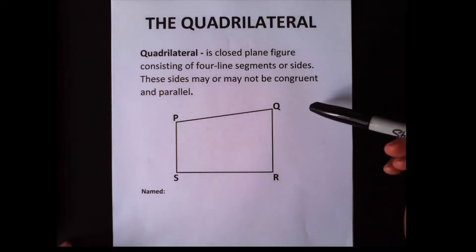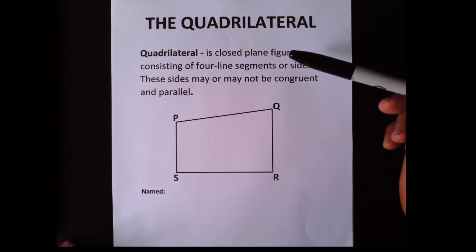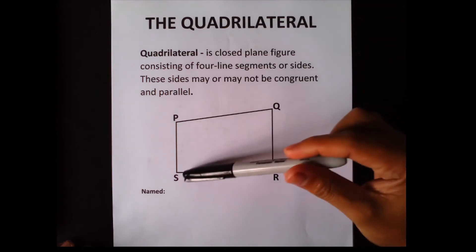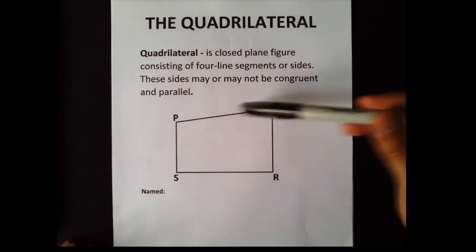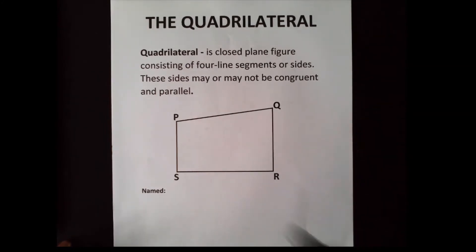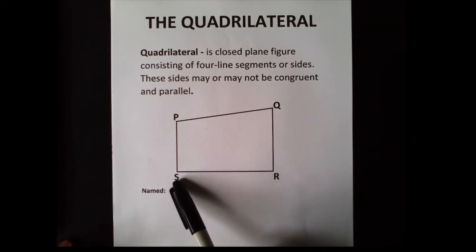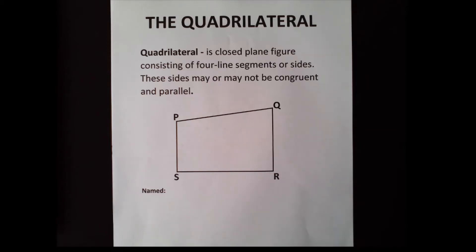Here is an example of a quadrilateral named PQRS. Notice that I've used capital letters. In naming the vertices of a quadrilateral, use capital letters, and they should be consecutive. So this is named quadrilateral PQRS.